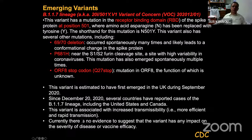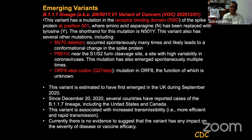Now focusing on the new variants: the B.1.1.7 lineage is the variant of concern, hypothesized to be up to 50% or higher more transmissible, though not necessarily more lethal. This is mostly based on clinical data and anecdotal evidence rather than peer-reviewed experiments. The variant has a mutation in the receptor binding domain of the spike at position 501, where asparagine has been replaced with tyrosine — the shorthand N501Y. It also has several other mutations including a deletion of two amino acids and a mutation of proline-68 to histidine near the S1 furin cleavage site, enhancing fusogenicity.